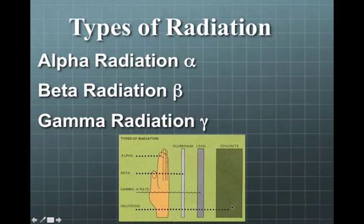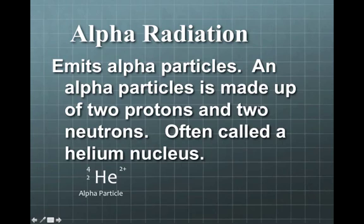Now, neutrons, like in, for example, a neutron bomb, takes a little bit more than just a simple lead vest. It actually takes a fairly thick wall of concrete to stop neutrons. All right, so let's go and look at the three main types that I want to talk about.